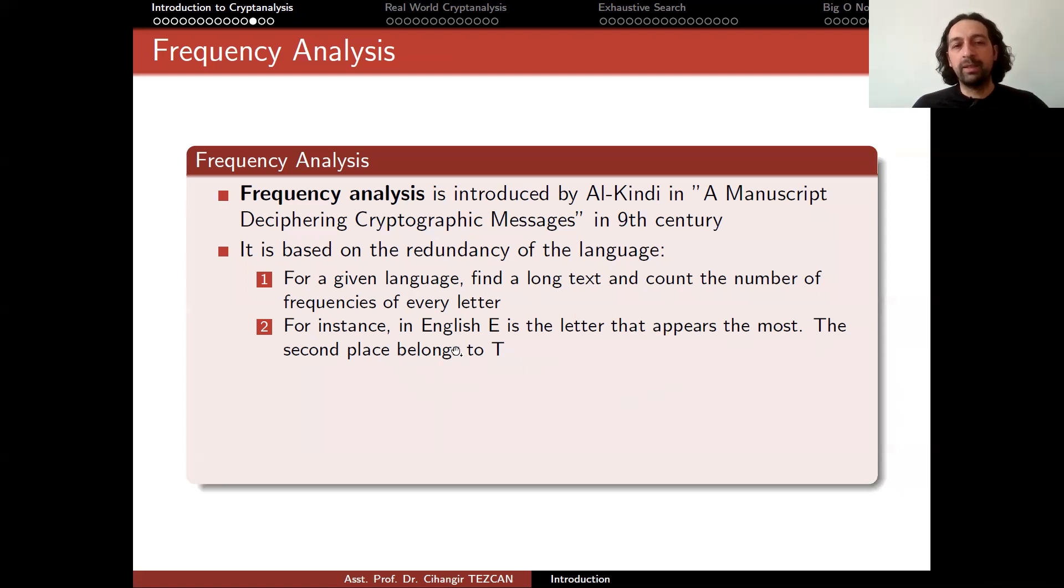So if you perform this attack for a Turkish text, you will observe that the letter that appears the most is A, not E. And for different languages, it would be different. But let's go back to the English case. So you just create such a table from E, then T, and so on. You will write 26 letters in the frequencies they appear.